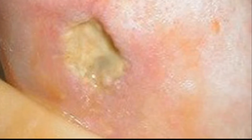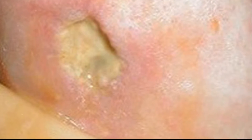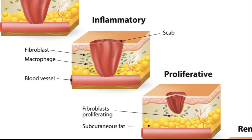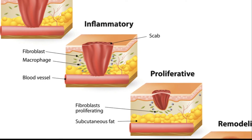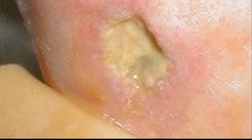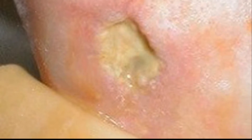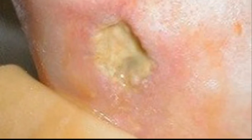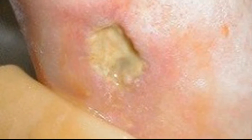First off, what's slough? Well, imagine a wound, and in that wound you see a layer of yellow or white tissue. That's slough. It's not as scary as it sounds — it's mainly composed of dead cells, fibrin, pus, and protein material.